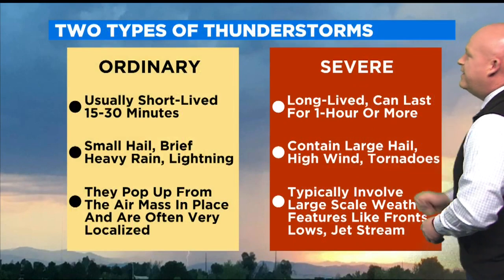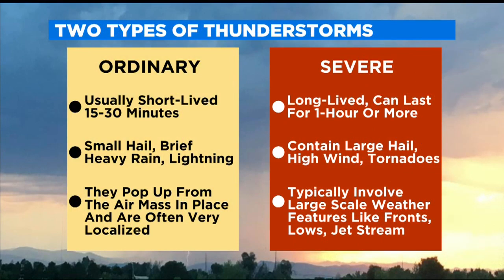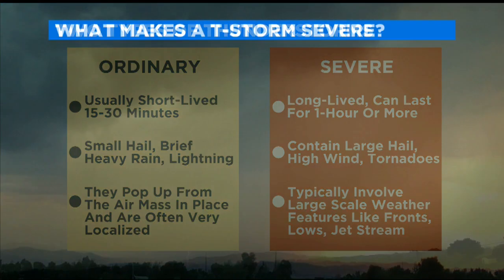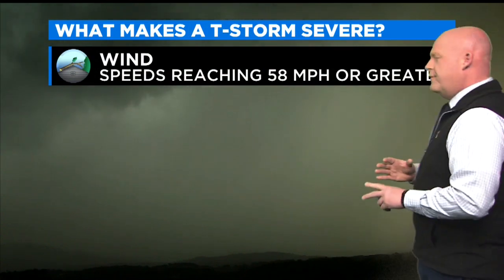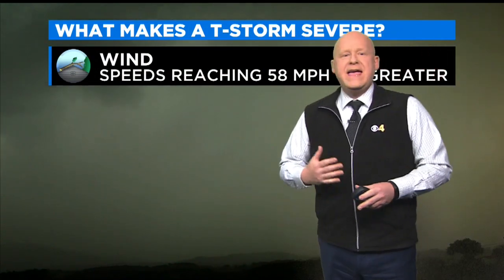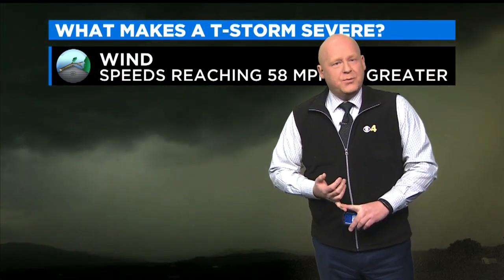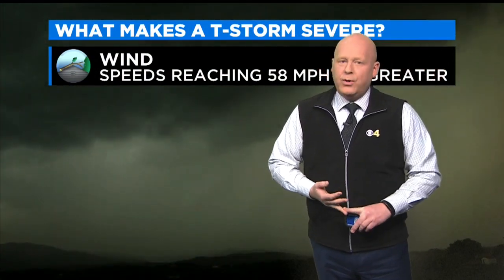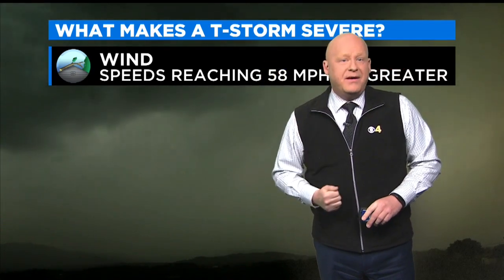Now the second type, the severe storm. This is a long-lived storm. They can last for an hour or more. They're the ones that have large hail and high winds and tornadoes. And usually, not always, but typically, you'll have some kind of a larger scale weather feature involved, like a surface low pressure, a cold front with a jet stream above you.